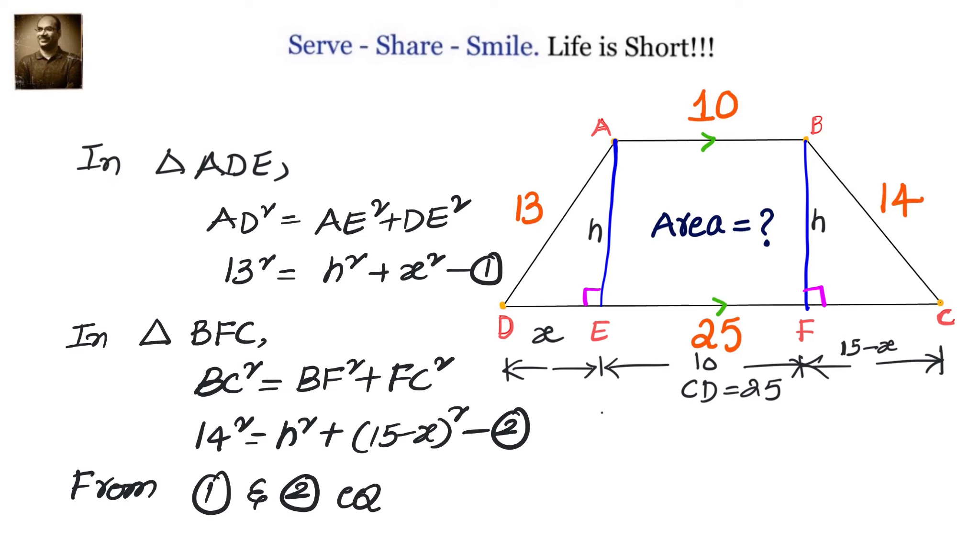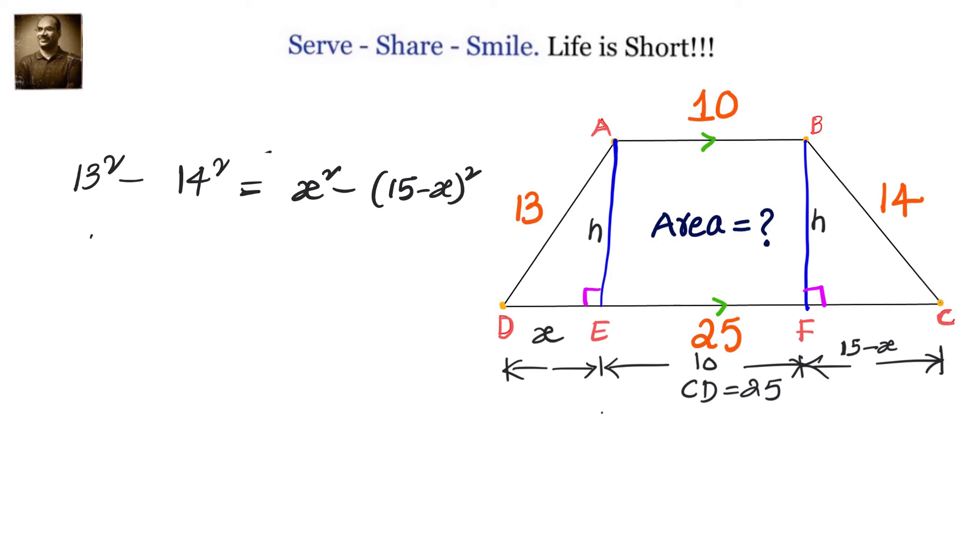So let's write down: 13² - x² = 14² - (15 - x)². You can open the brackets and simplify this, or you can use algebraic identity a² - b² = (a + b)(a - b). What I have tried to do here is get variables on one side, numbers on one side. So we have 13² - 14² = x² - (15 - x)².